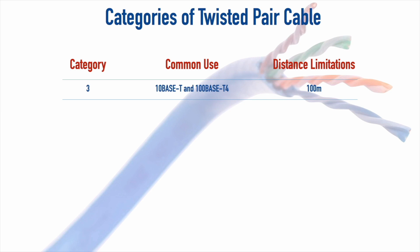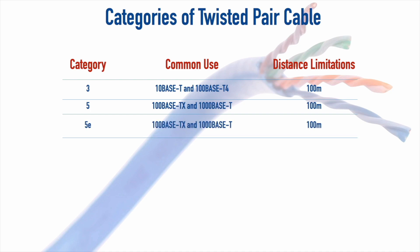When Fast Ethernet arrived and people wanted 100 megabits per second, Category 3 wasn't up to the task, so Category 5 — Cat5 — was installed. Cat5 supports 100BaseTX at 100 megabits per second using just two of the four pairs, specifically pins 1, 2, 3, and 6. Category 5 can also do 1000BaseT using all eight wires, giving one gigabit per second. Category 5e doesn't add more speed or distance but has better electrical characteristics and is recommended over standard Category 5. Both have 100-meter distance limitations.